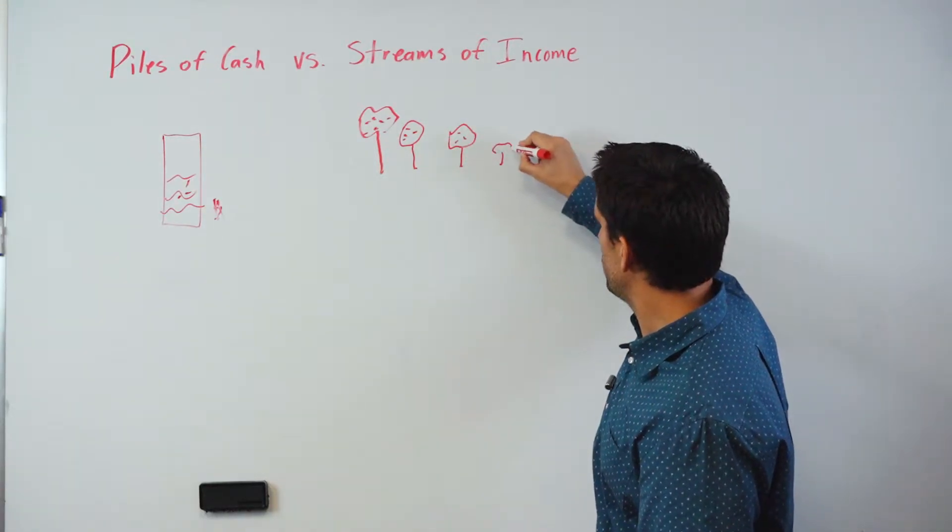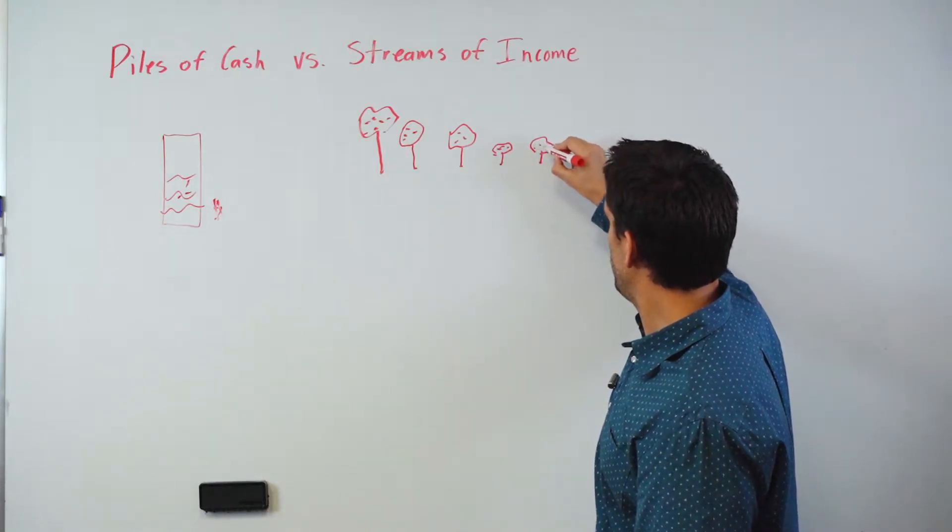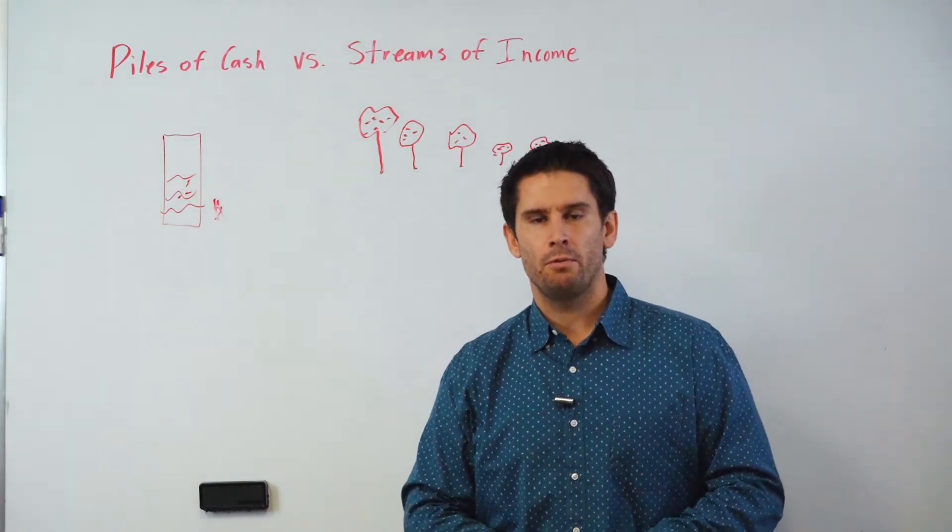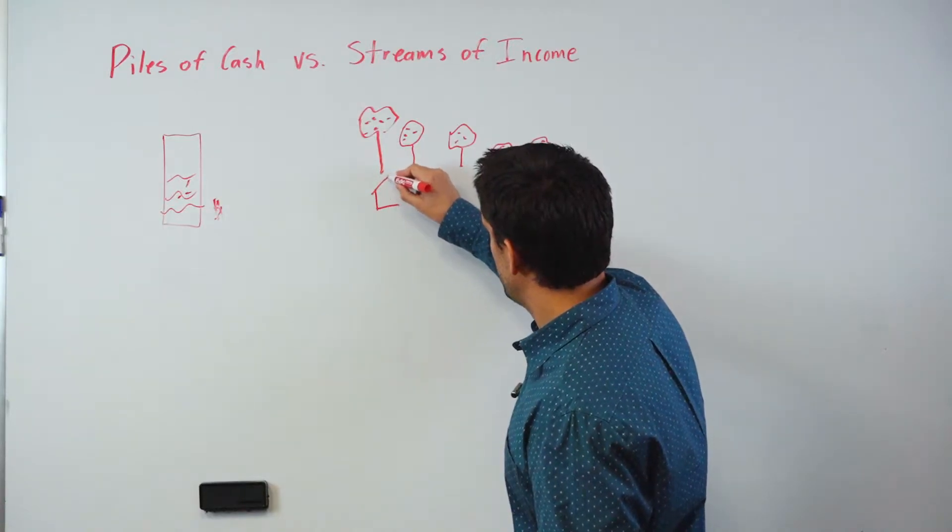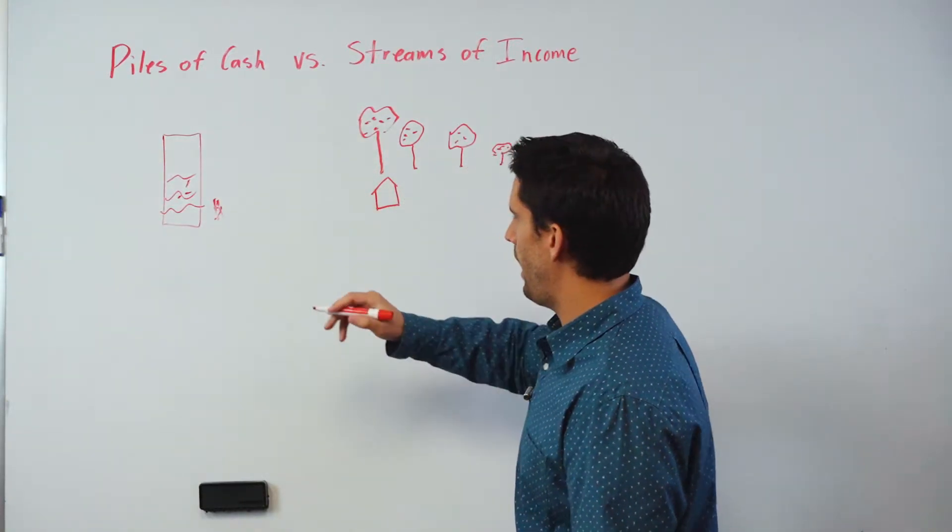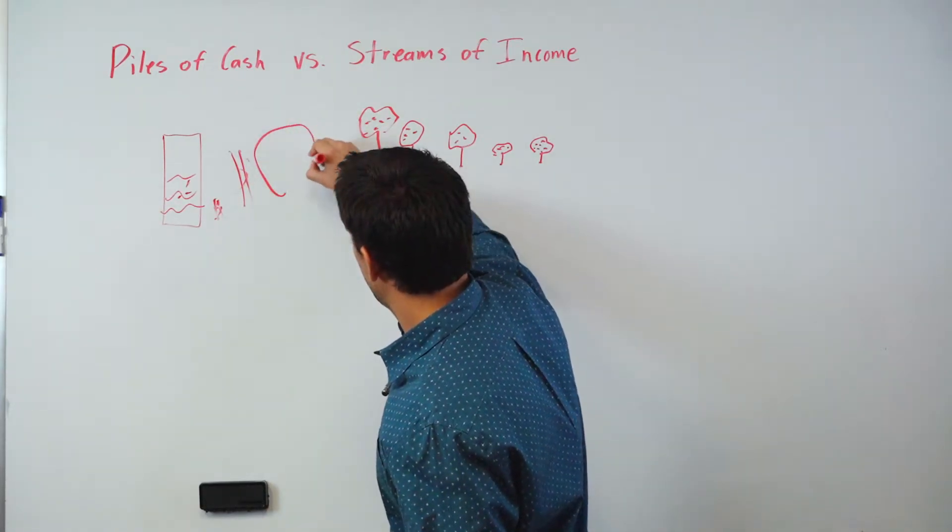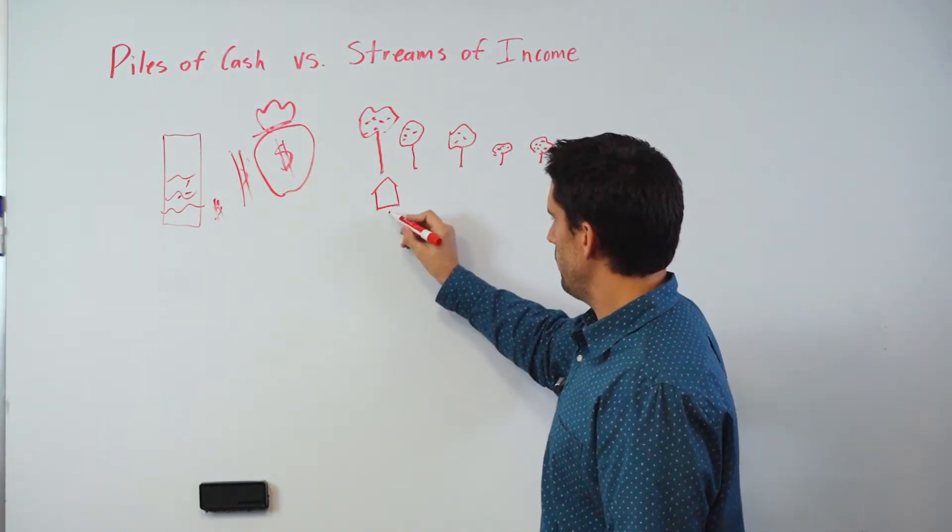These trees start growing, and what's amazing is that as they grow they get better and better each year. You get more fruit from them - appreciation, market rent growth. Every single one of these, instead of being a big pile of cash like the big Scrooge McDuck bank bag, is producing just a little stream of income.